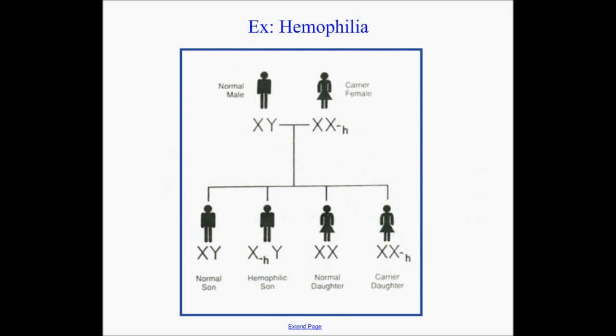Let's take a look at the hemophilia example in more detail. Suppose we did a cross. This male looks totally normal — if hemophilia is a recessive trait, which it is, he would not have the gene for it, so his genotype would have to be XY where the X is normal. Over here we have a female carrier in a heterozygous condition — she does not show the trait but she's carrying it. So she is X-normal and X-H for hemophilia.